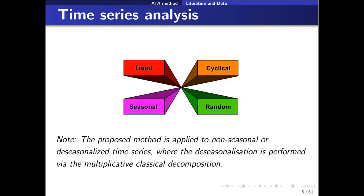All time series data can be thought of as consisting of four main components: the trend, seasonal, cyclical, and random components. The goal is to effectively model each of these components so that we can obtain an accurate forecast for the future. It's also worth noting that the proposed method will be applied to non-seasonal data, or if the data contains a seasonal effect, we use multiplicative classical decomposition first.